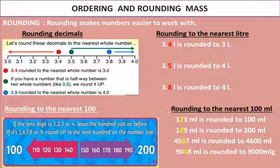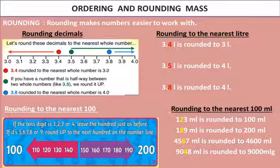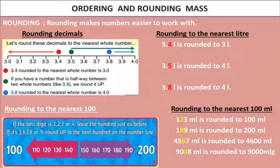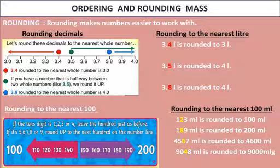If a number is halfway or in the middle of two whole numbers — meaning the tenths place is 5 or more than 5 — we round up. For example, 3.8 rounded to the nearest whole number is 4, because the tenths place is 8, which is more than 5, so we round up to the next whole number. So 3.4 liter rounds to 3 liter, 3.5 liter rounds to 4 liter, and 3.8 liter rounds to 4 liter.